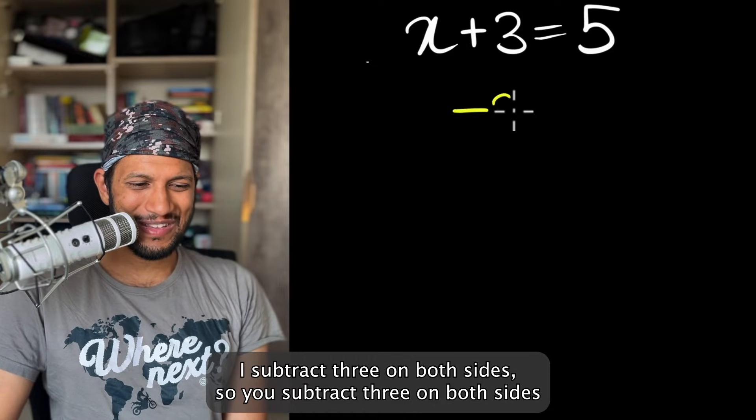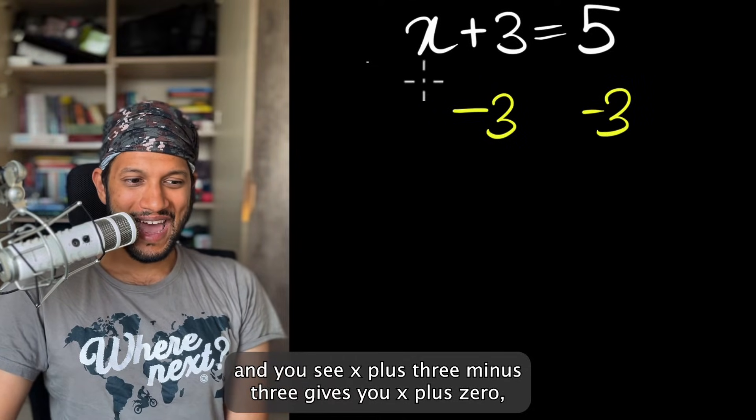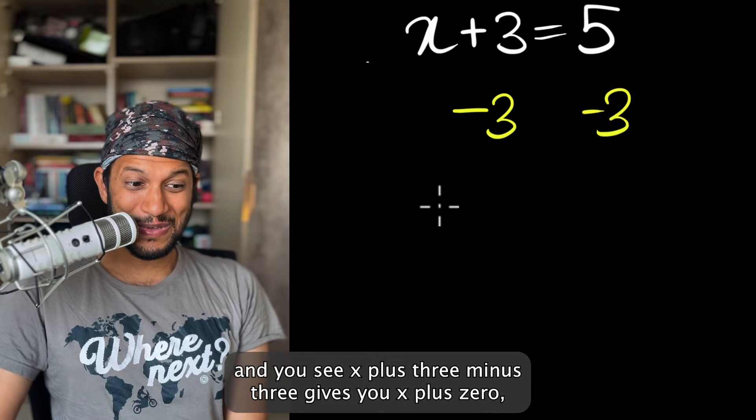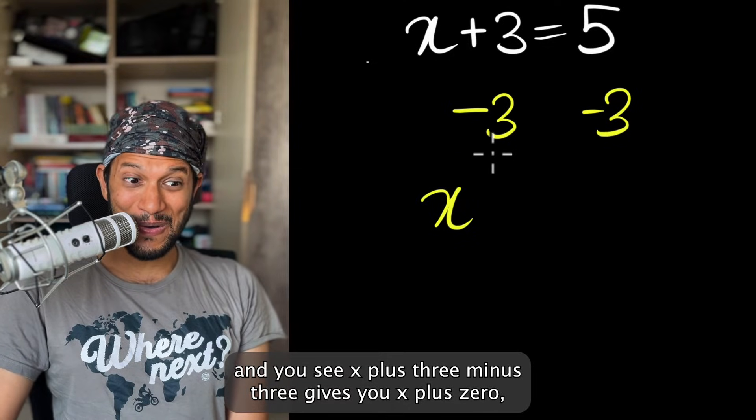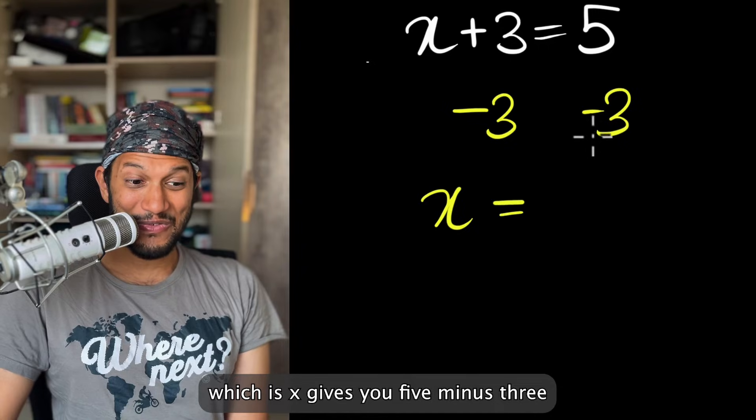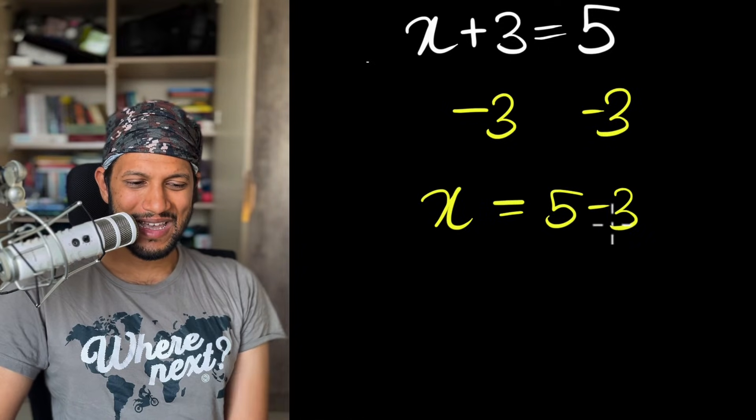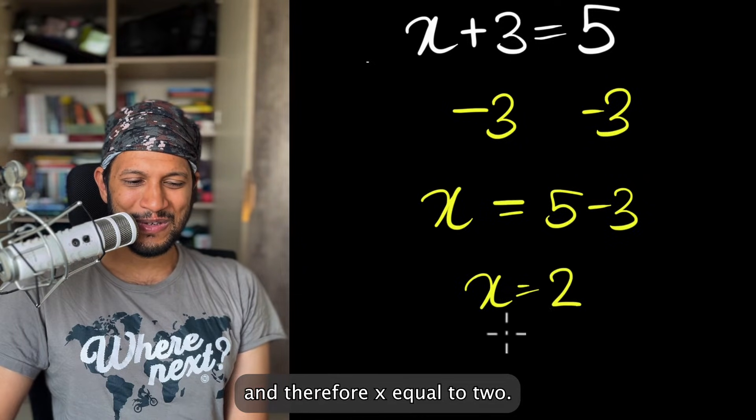So you subtract three on both sides and you see X plus three minus three gives you X plus zero, which is X, gives you five minus three. And therefore X equal to two.